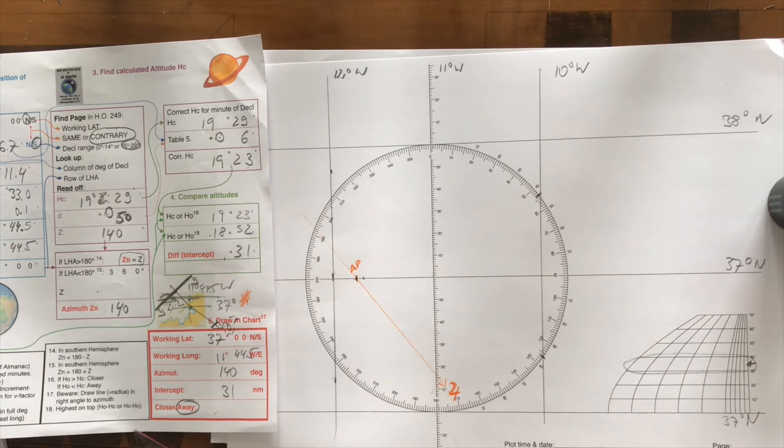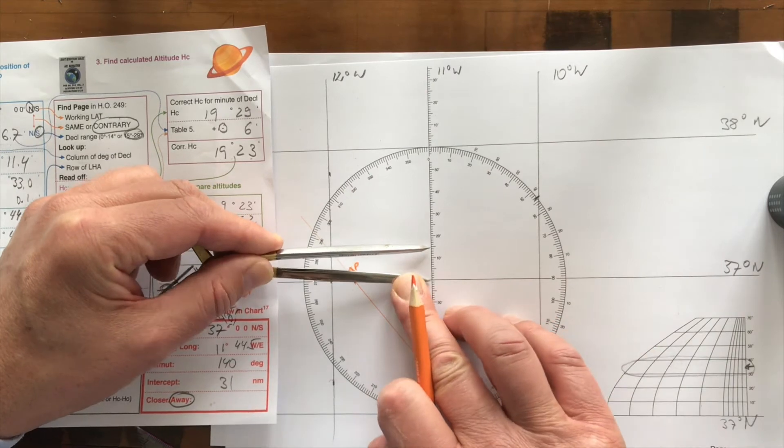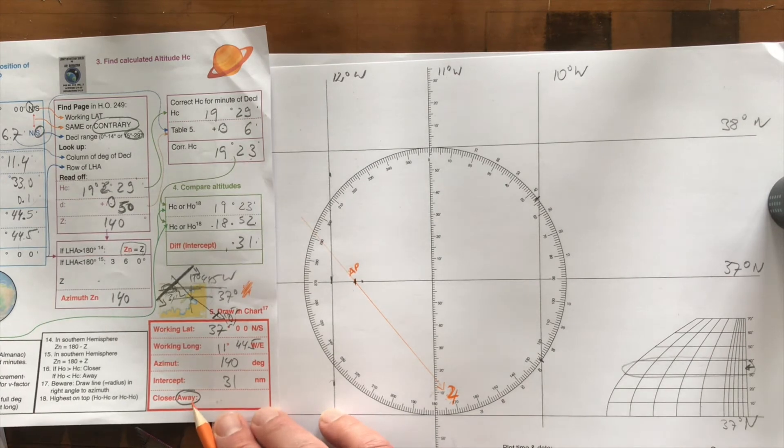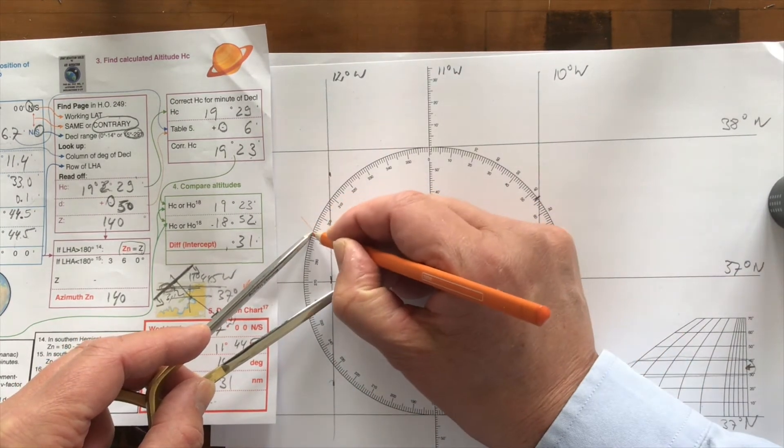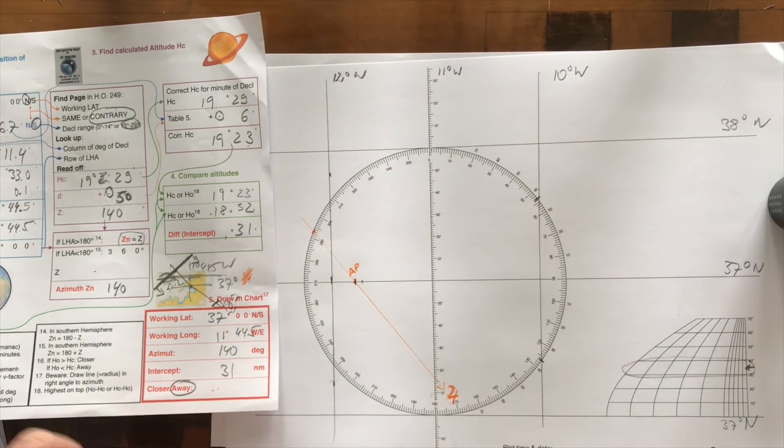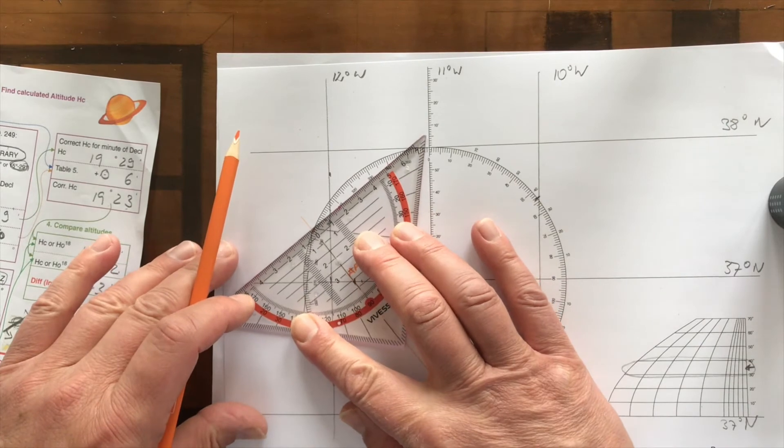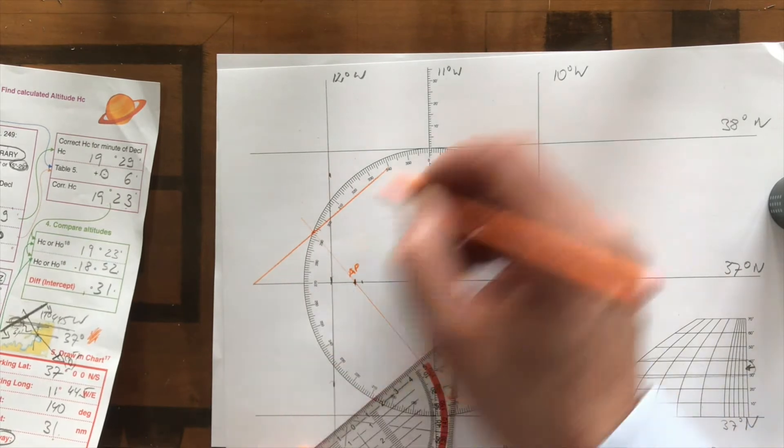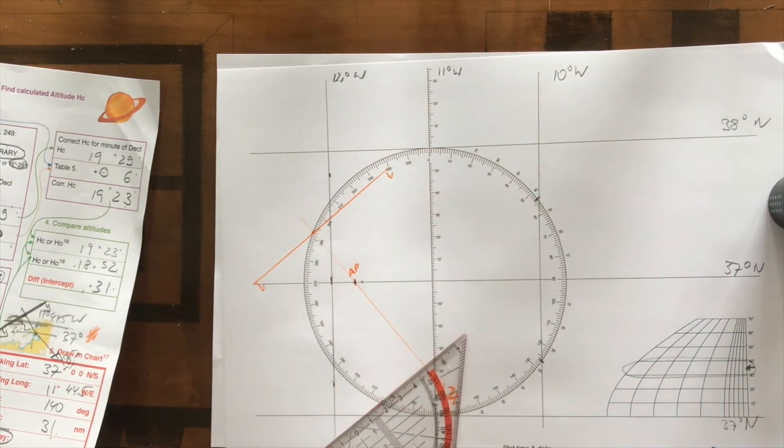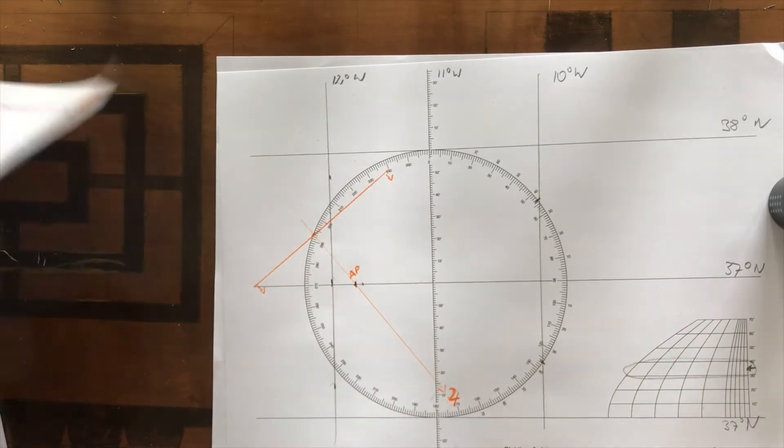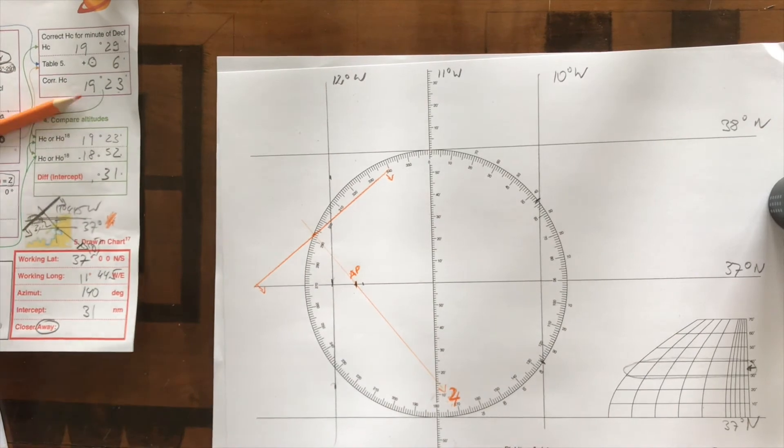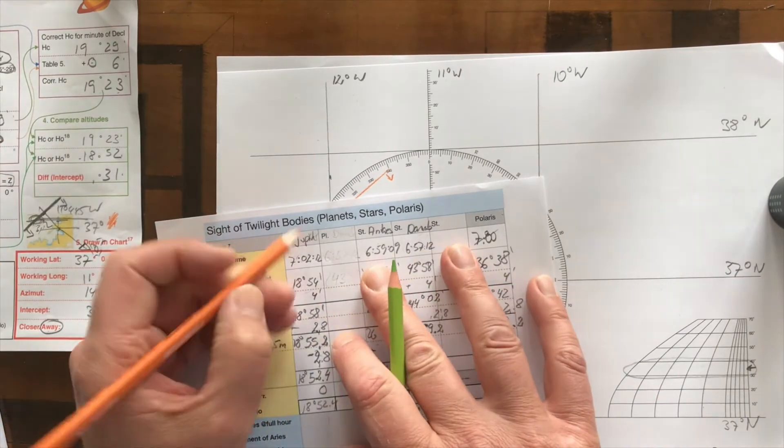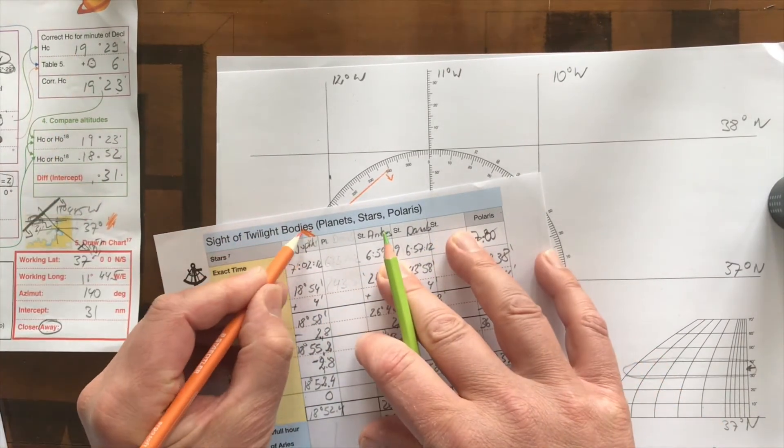Then we have an intercept of 31 nautical miles. The distance is always measured here. It should be away, so away from Jupiter, 31. That's there. That's not where we are. This is where the position line crosses the azimuth. We are somewhere along that line. And here is the direction of Jupiter. So we can throw that away. We've done that.